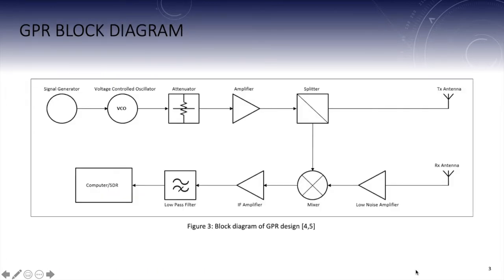Figure 3 displays a block diagram of my proposed GPR design. The signal generator generates a sawtooth wave at the inputted frequency. Next the wave passes through the VCO which generates the frequency that will be transmitted.